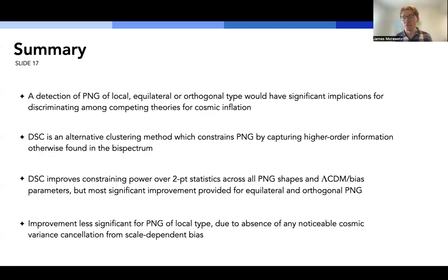So I'm just going to briefly summarize what we've discussed in this talk so far. We began with a discussion of the different PNG types and their implications for discriminating between different theories for cosmic inflation. We then proceeded to introduce density split clustering as an alternative method for constraining PNG by probing higher-order information that would normally be captured in the bispectrum. We also discussed how density split does indeed, using our Fisher formalism, does indeed provide significant improvement in constraining power over conventional two-point statistics across all the PNG shapes and lambda-CDM and bias parameters. But we observed the most significant improvement for equilateral and orthogonal PNG. On the other hand, the more surprising result was that we observed less significant improvement for PNG of local type despite expecting to see cosmic variance cancellation due to scale-dependent bias.